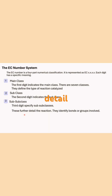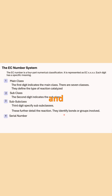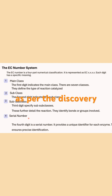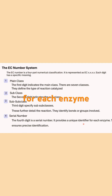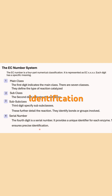The third digit specifies the sub-subclass, further detailing the reaction by identifying bonds or groups involved. Finally, the fourth digit is the serial number as per the discovery of that particular enzyme, providing a unique identifier for each enzyme and giving us the precise identification of that particular enzyme.